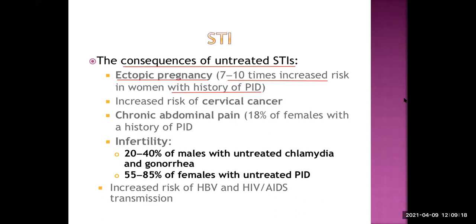Because of salpingitis, there is blockage of the fallopian tube. The ovum cannot pass towards the endometrial cavity, and after fertilization, it may be implanted right there in the fallopian tube — that can result in ectopic pregnancy. It is all about the occlusion or blockage of the fallopian tube.